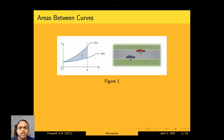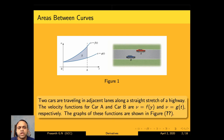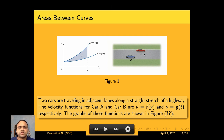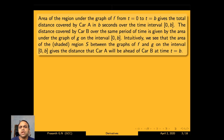Consider two cars travelling in adjacent lanes along a straight stretch of a highway. The velocity functions for car A and car B are v = f(t) and v = g(t) respectively. The graph corresponding to each vehicle is shown. The area of the region under the graph of f from t = 0 to t = b gives the total distance covered by car A in b seconds over the time interval [0, b].